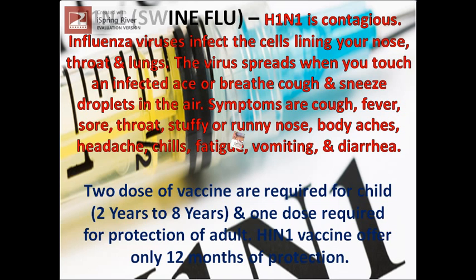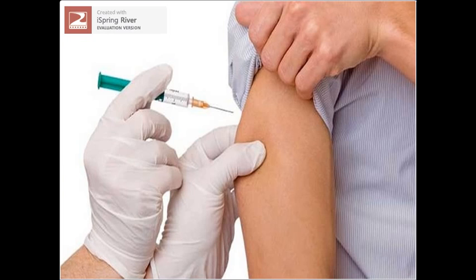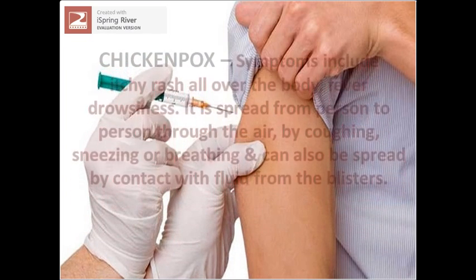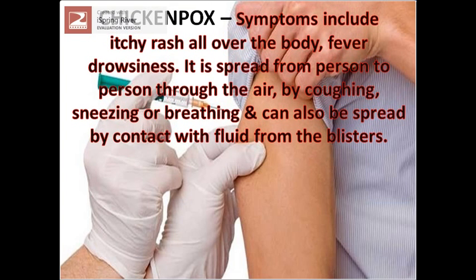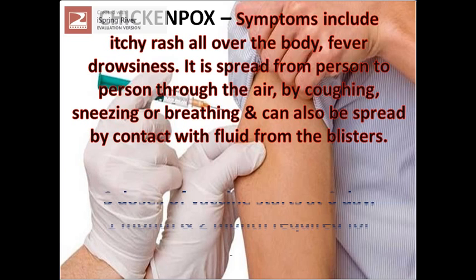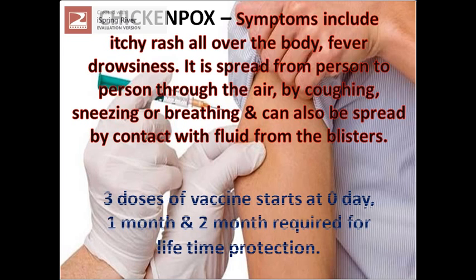Chicken Pox: symptoms include an itchy rash all over the body, fever, and drowsiness. It is spread from person to person through the air by coughing, sneezing, or breathing, and can also be spread by contact with fluid from the blisters. 3 doses of vaccine starting at day 0, 1 month, and 2 months, required for lifetime protection.